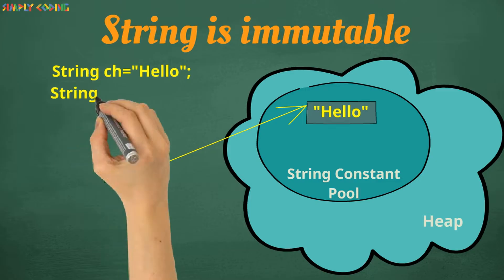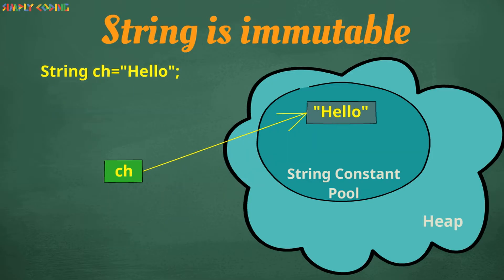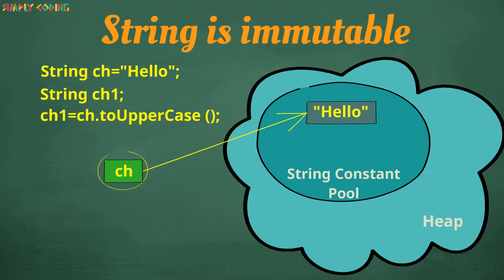If you create a second variable referring to the same string, it creates only a new reference variable and points to the same string. Suppose we try to use the toUpperCase function on ch. It does not change ch. The VM creates a new string with uppercase and returns a reference to that.